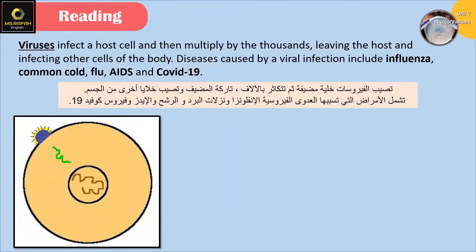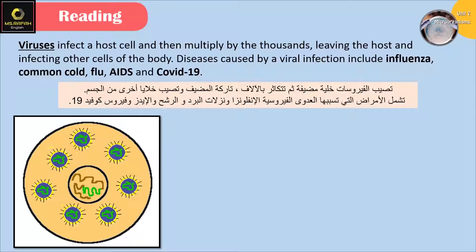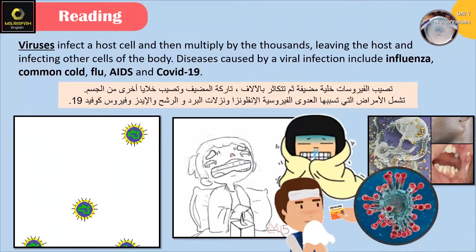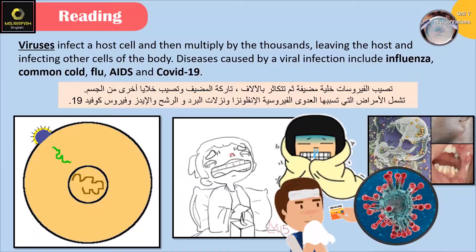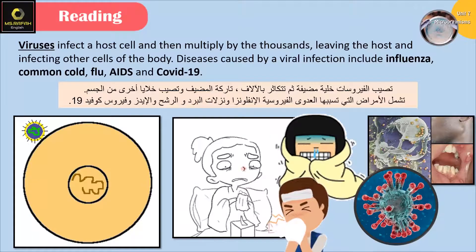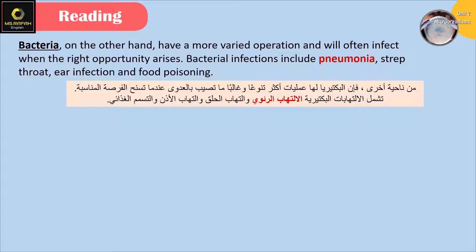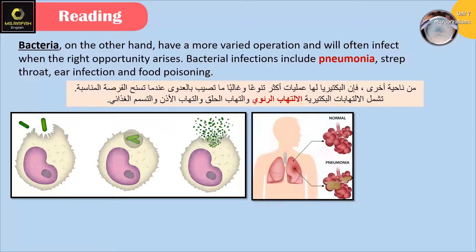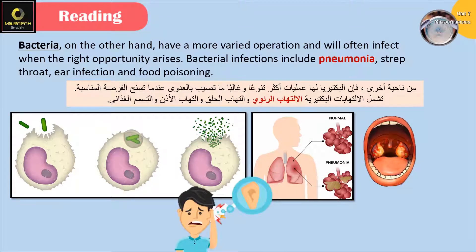Viruses infect a host cell and then multiply by the thousands, leaving the host and infecting other cells of the body. Diseases caused by a viral infection include influenza, common cold, flu, AIDS, and COVID-19. Bacteria, on the other hand, have a more varied operation and will often infect when the right opportunity arises. Bacterial infections include pneumonia, strep throat, ear infection, and food poisoning.